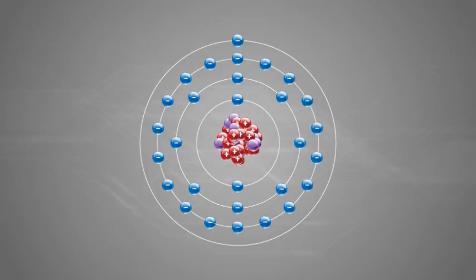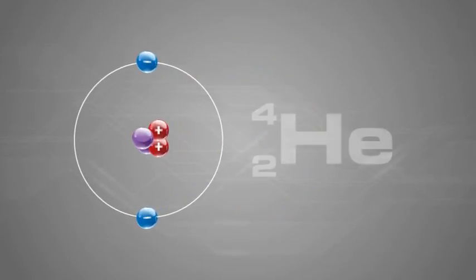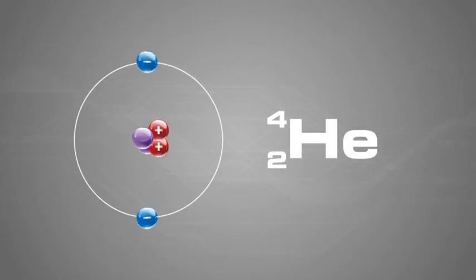It's the number of protons that defines an element. A helium atom, represented by the symbol He in the periodic table, is written with two numbers, one above and one below.